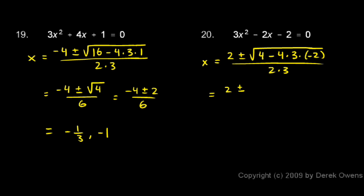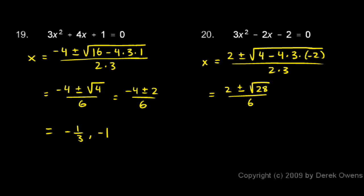Let's simplify this. This will be 2 plus or minus the square root. Now, what do we have up top here? We have 4 times 3 is 12, and 12 times negative 2 is negative 24. So we have 4 minus negative 24, which is the same as 4 plus 24. So 4 plus 24 is 28 — that's what's under our radical. We can simplify the square root of 28: 28 is 4 times 7, so the square root of 28 can be written as 2 times the square root of 7.